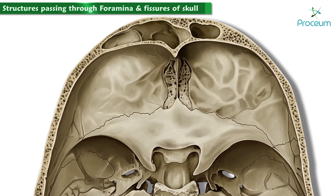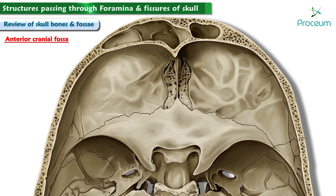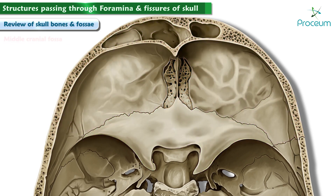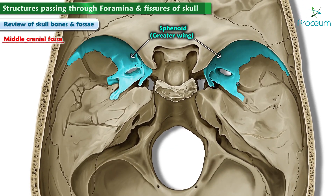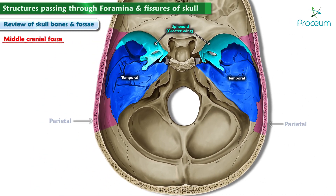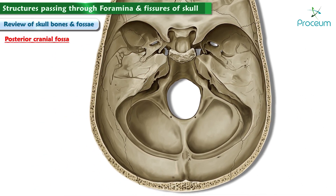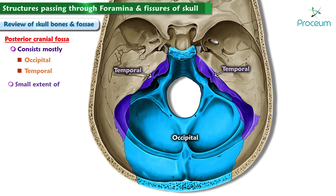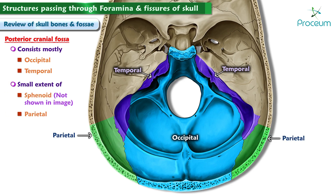Before we begin the lecture regarding the foramina and fissures, let's quickly review the bones and fossae that make up the floor of the skull. The anterior cranial fossa is made up of parts of the frontal, ethmoid, and sphenoid bones. The middle cranial fossa is made up of parts of the sphenoid, temporal, and parietal bones. The posterior cranial fossa consists mostly of parts of the occipital and temporal bones, and to a smaller extent the sphenoid and parietal bones also.